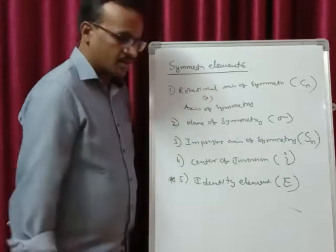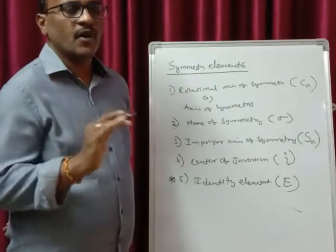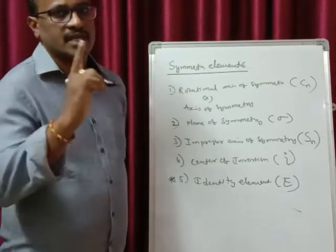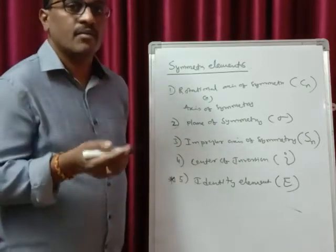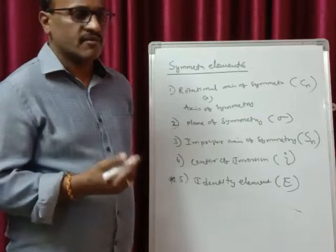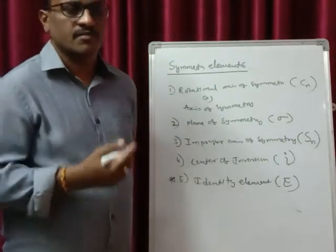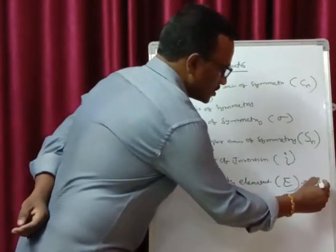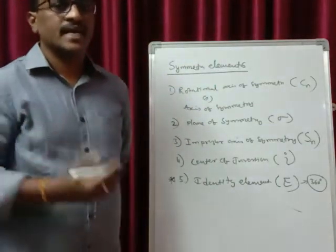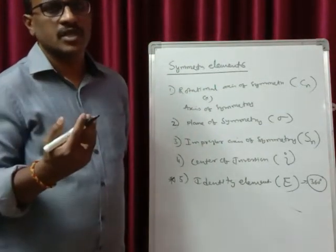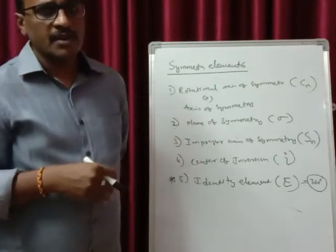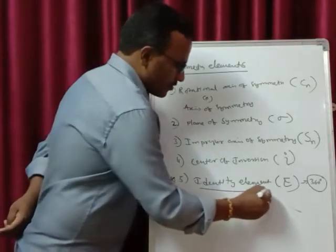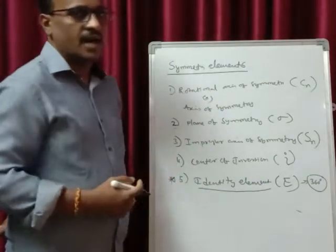Regarding the identity element: every object in the universe — not only molecules, every object — will definitely have one symmetry element, that is the identity element. If someone asks what symmetry element is present for the universe, it is identity. The identity element is obtained when you rotate any object to 360 degrees. Rotation of any object to 360 degrees gives you an identical structure. Therefore, every molecule in the universe will definitely have one element — the identity element, indicated by E.